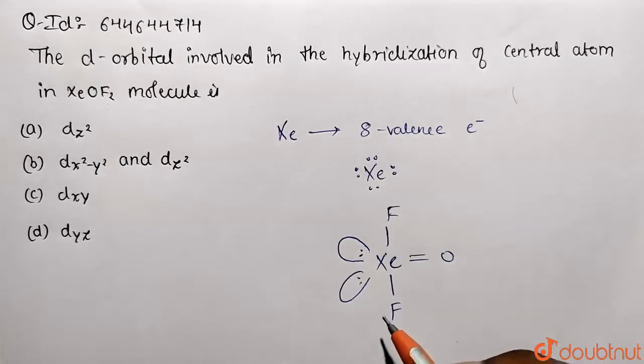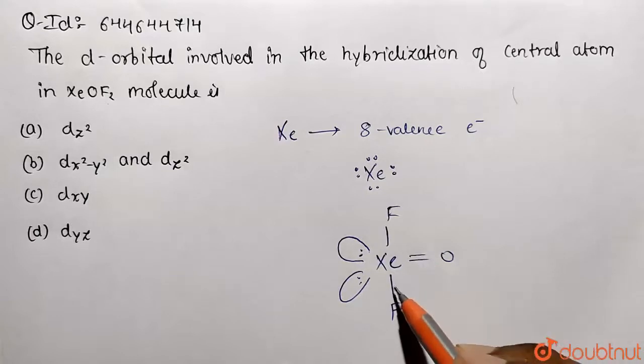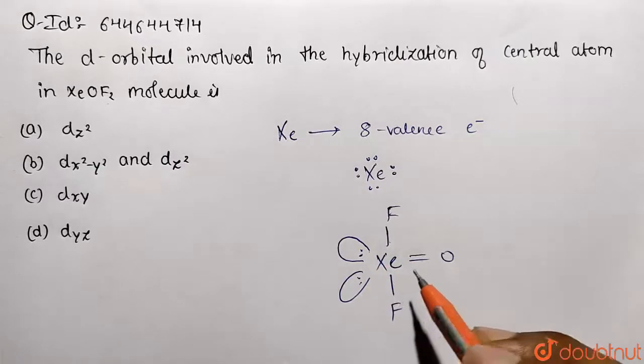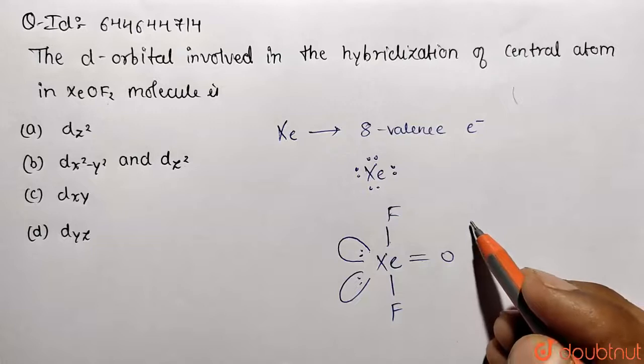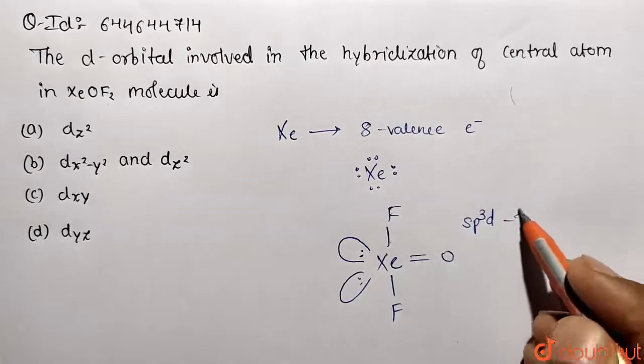So now count the hybridization of the molecule. This is one sigma, this is also one sigma, and another is pi. So one, two, three sigma, and there are two lone pairs. So total of how many orbitals we need? Total of five orbitals. So hybridization is going to be sp3d type. So this is the hybridization of the central atom.